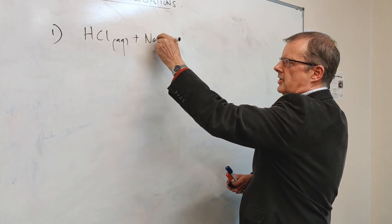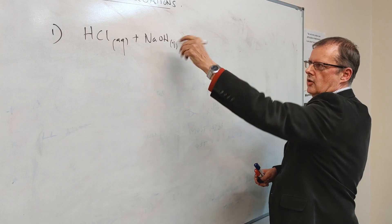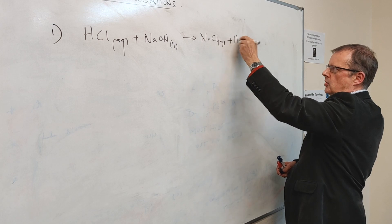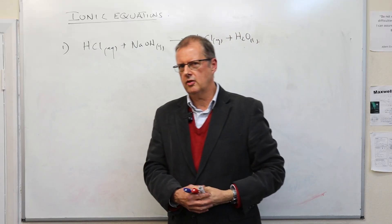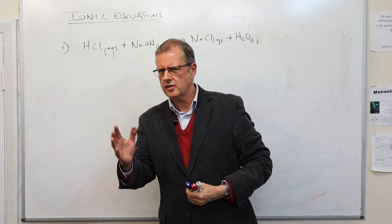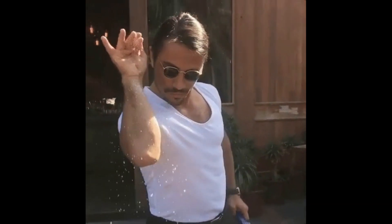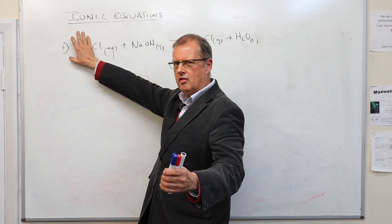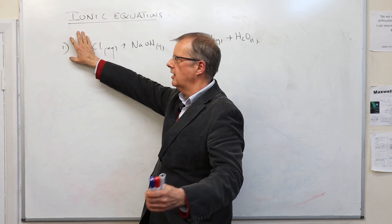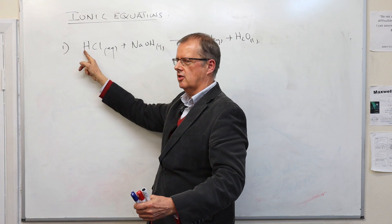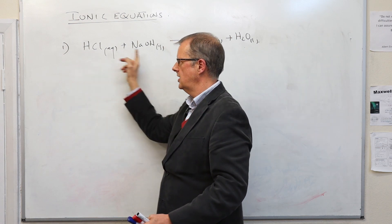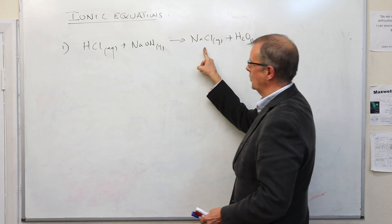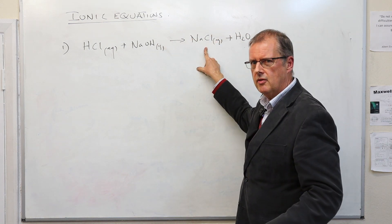Hydrochloric acid reacting with sodium hydroxide. Acid plus alkali gives a salt plus water — sodium chloride plus water. A question students often ask is: what is the salt, and how do you know? A very simple trick: to know what the salt is, just cover up the hydrogen in the acid formula and put the metal in its place. So instead of hydrogen chloride, it's going to be sodium chloride. Cover up the hydrogen, put the metal in, and that is the salt. Sodium chloride — the most well-known salt.